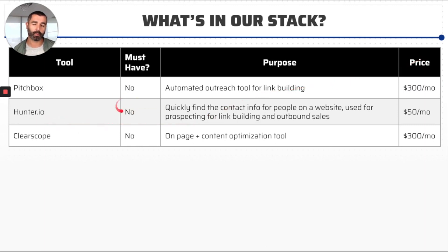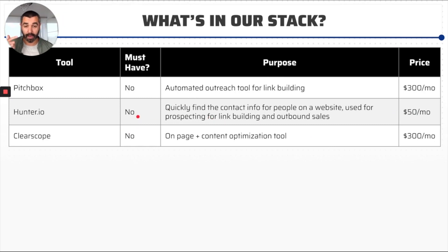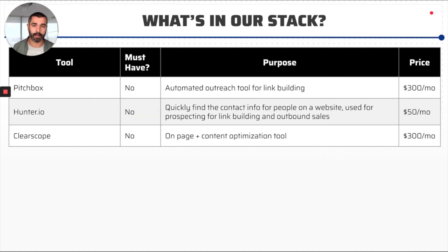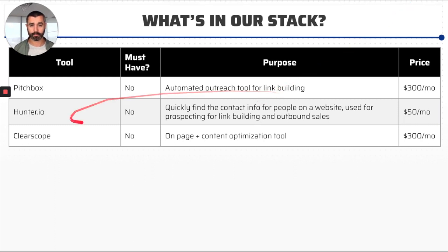Hunter.io — this one could actually be a must-have. There's a free version that allows up to 50 email searches a month, which is useful if you're using it on a small scale. What we use it for is mainly outbound sales. It's a browser plug-in that you click and it pulls back all the email addresses and social profiles from a website, which is really powerful when you're trying to build a relationship. So whenever we're doing outbound sales or outbound link outreach, this is a really powerful tool.